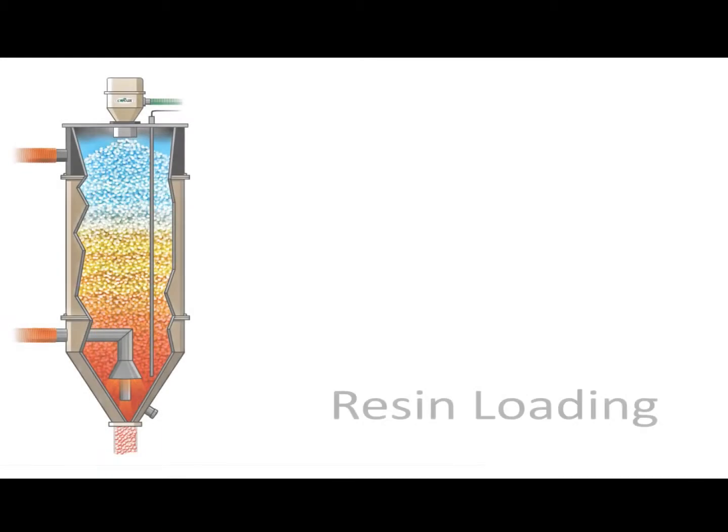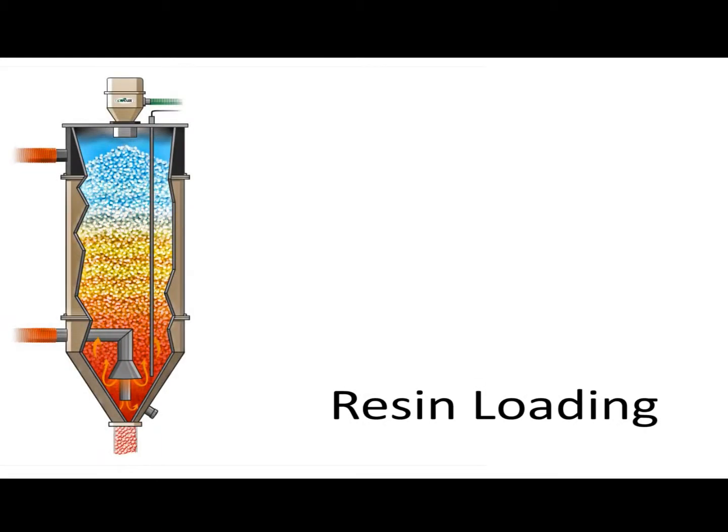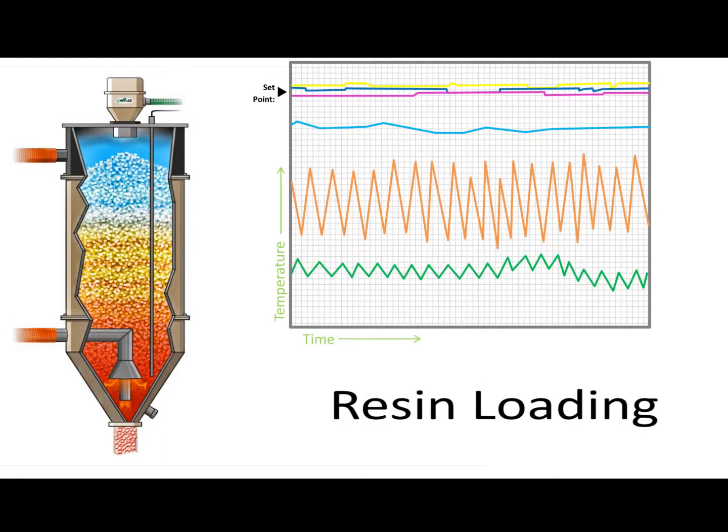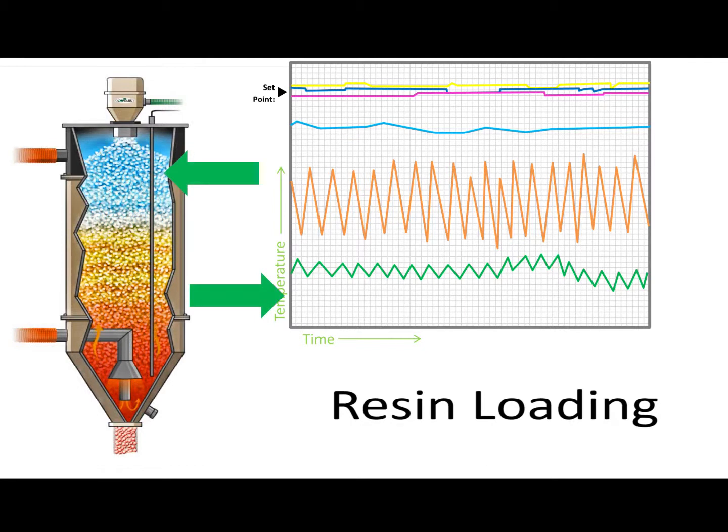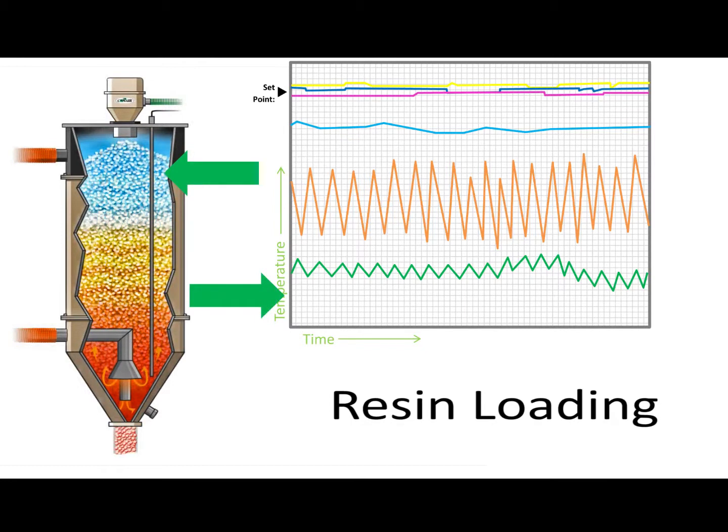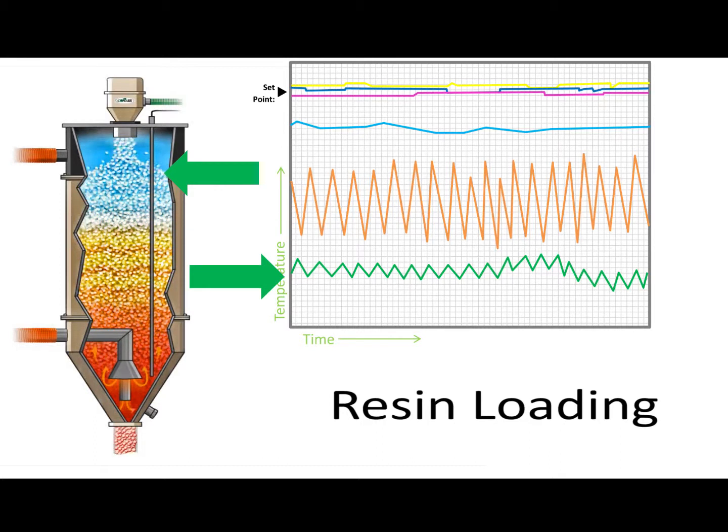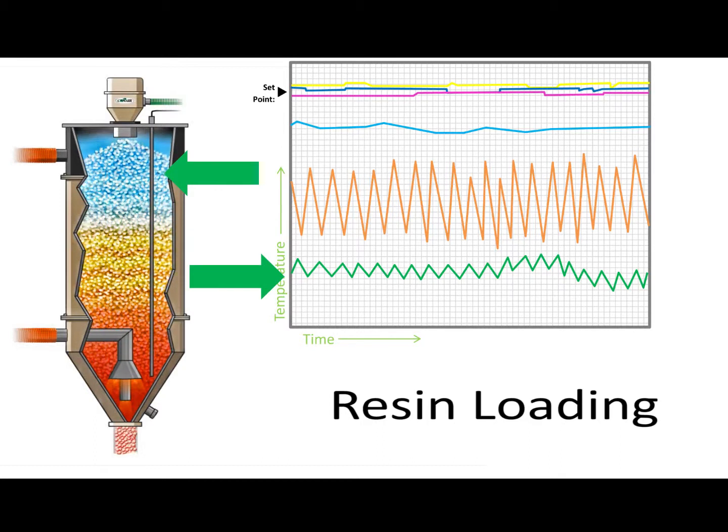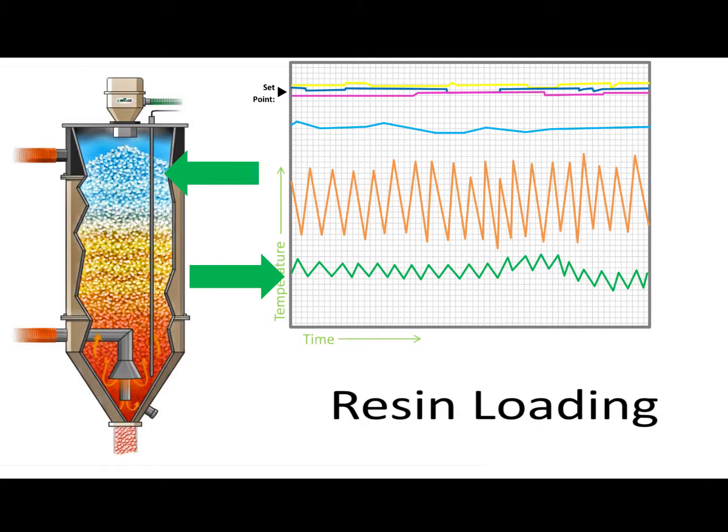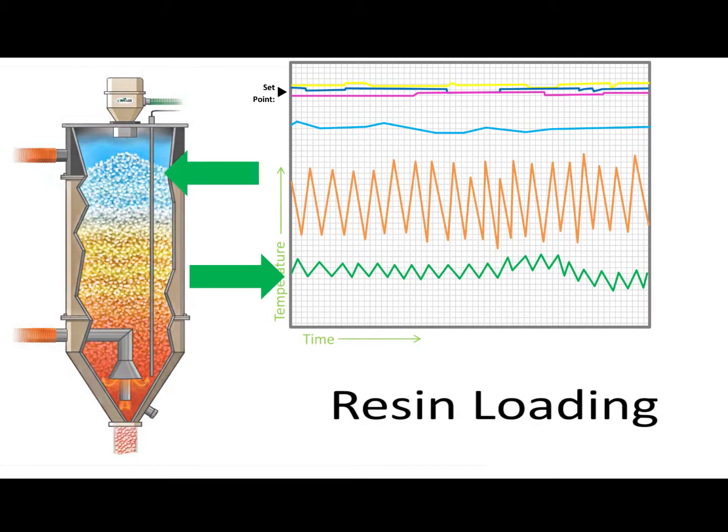As a helpful pattern to confirm consistent resin loading, the drying monitor can show material loading as a decrease in the T5 temperature as new colder material is loaded, alternating with a rise of T5 as that new material absorbs drying heat. This reaction will be seen as a familiar sawtooth up and down temperature pattern.